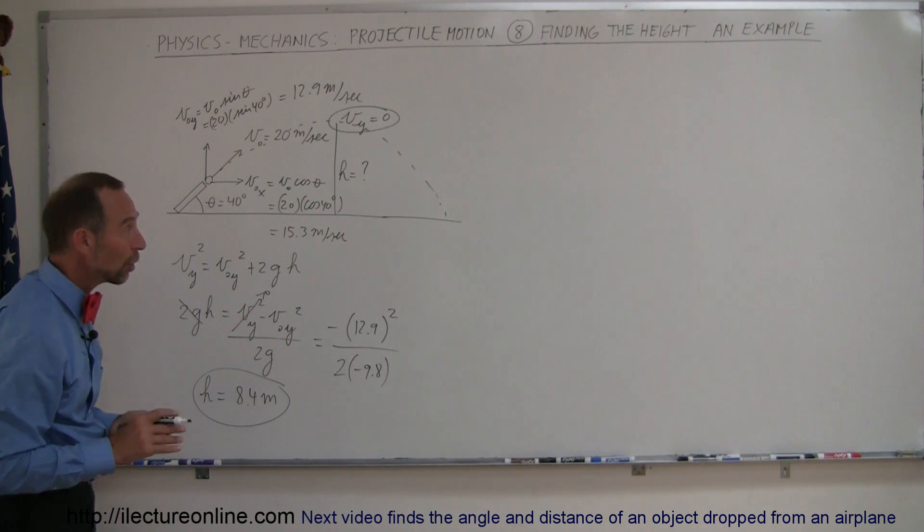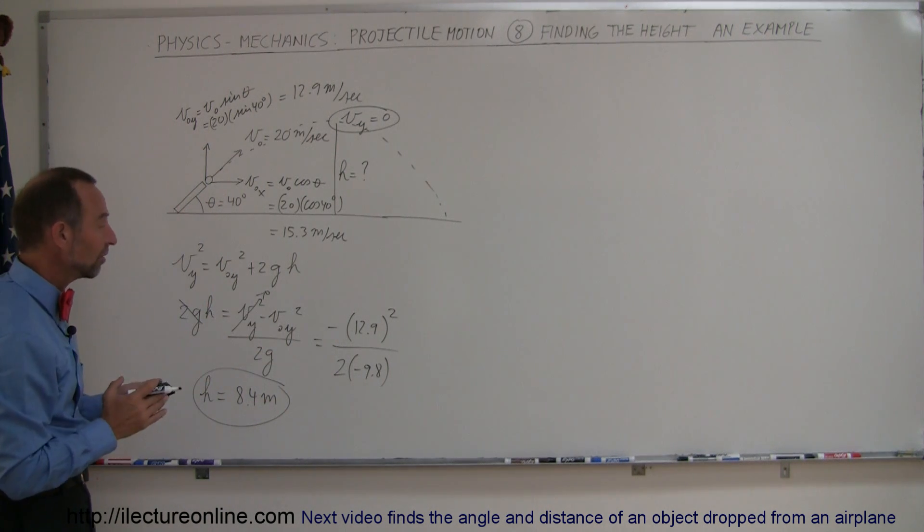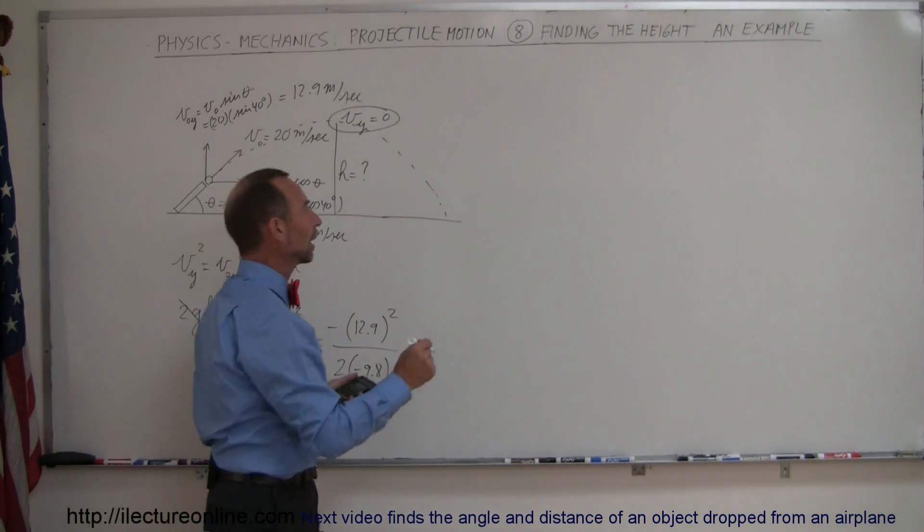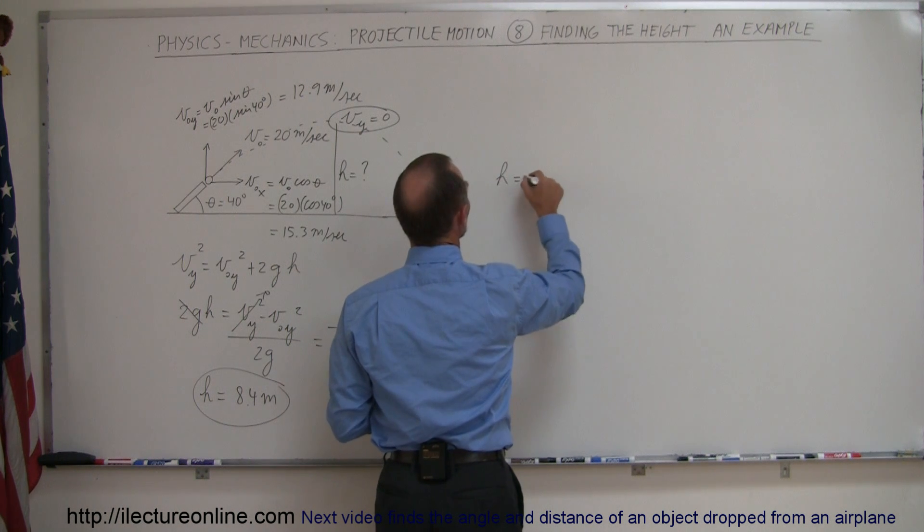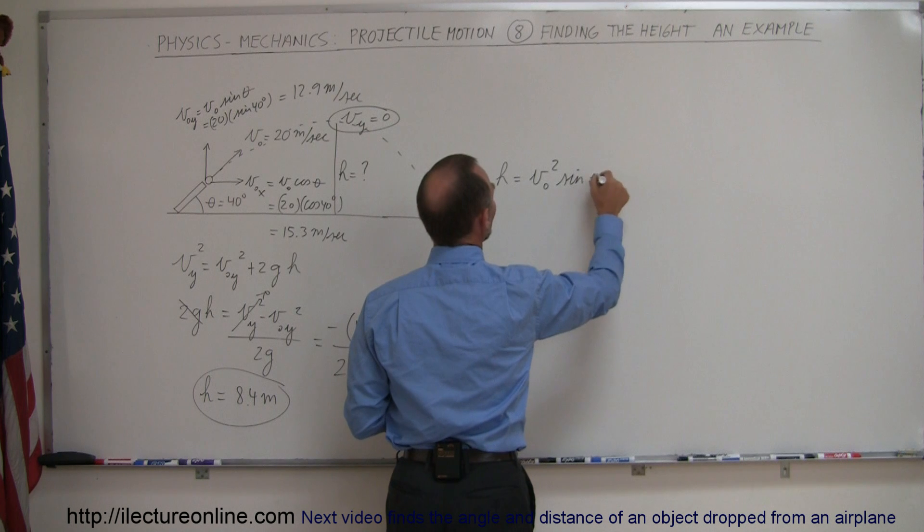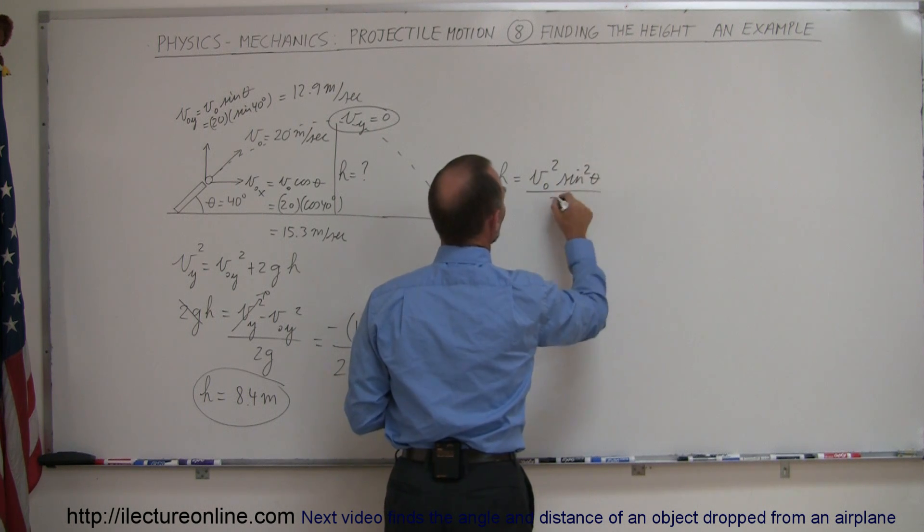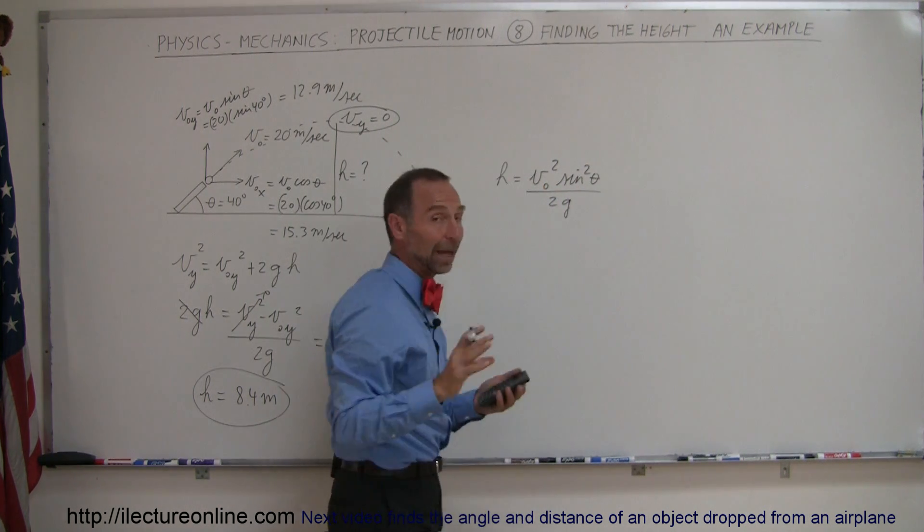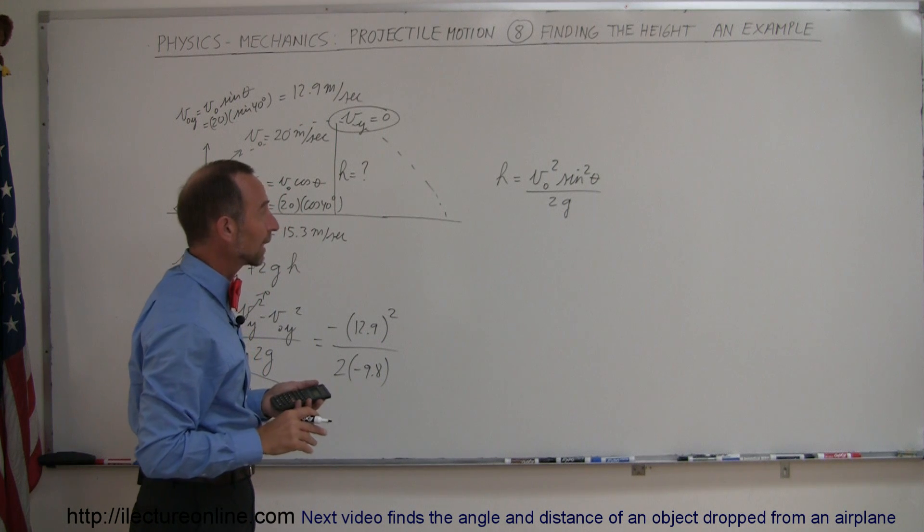Now remember in the previous video we did the general approach of this and we came up with a general equation that told us that the height was equal to v initial squared times the sine of theta squared all divided by 2g, g being a positive 9.8 so that's where we got rid of the negative sign.